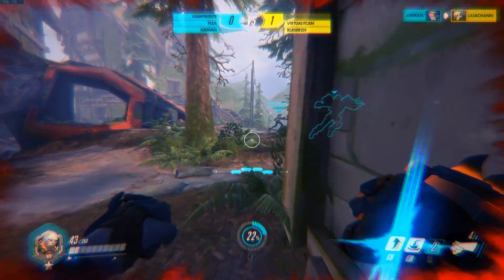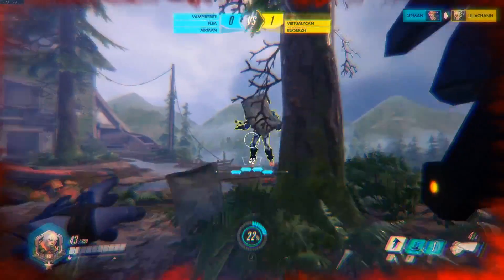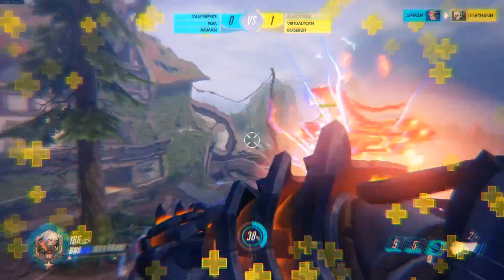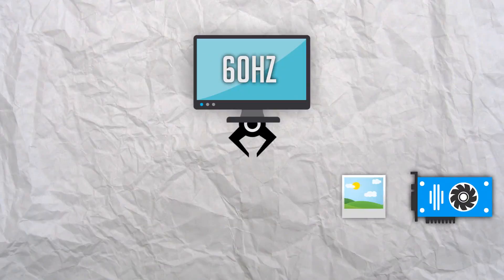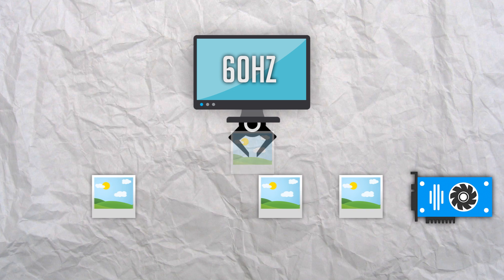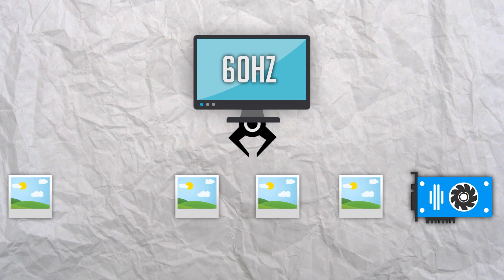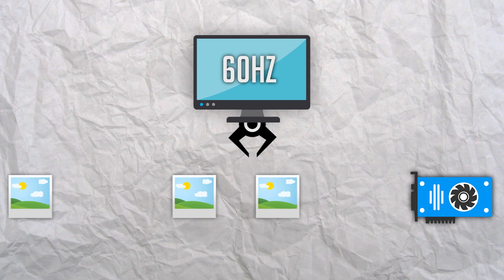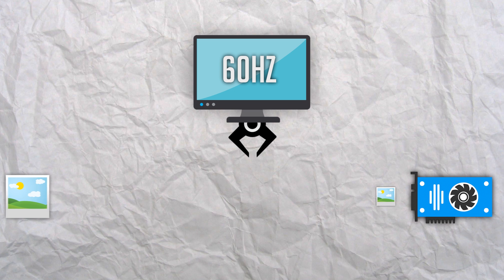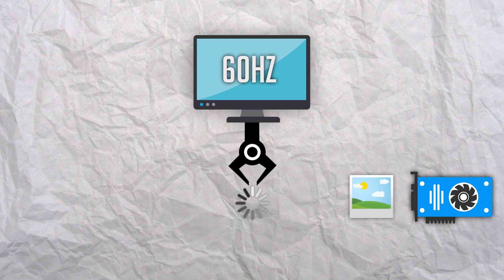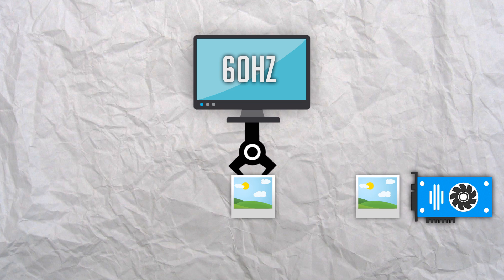So as long as your PC is able to render 60 frames a second, then everything will be fine, right? Well, not quite — because although you may be able to generate a constant 60 frames every second, it doesn't necessarily mean that every single one of those 60 frames took the exact same amount of time to render.